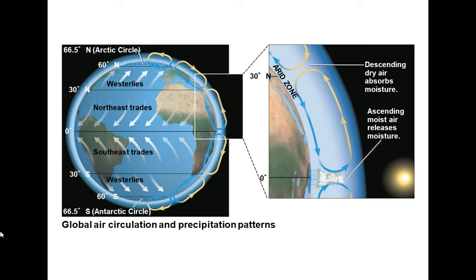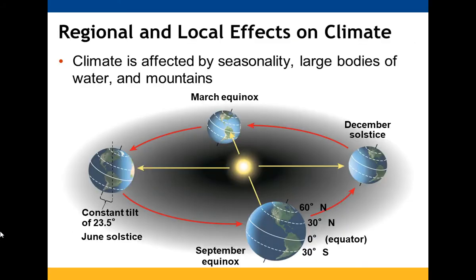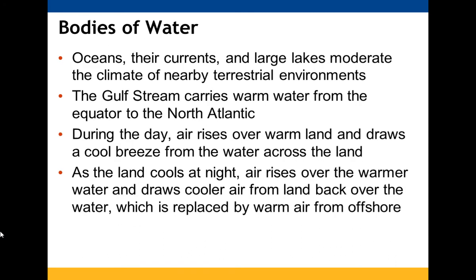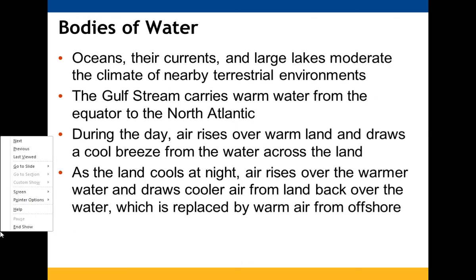The westerlies flow toward the north and south poles, while the northeast and southeast trade winds and descending dry air absorb water and ascending air releases it — cycles similar to feedback loops. Climate can also be affected by seasons, large bodies of water, and mountains. Seasonality depends on light and temperature, with variations increasing toward the poles. At high latitudes this is caused by the Earth's axial tilt and its passage around the sun, with belts of wet and dry air straddling the equator shifting throughout the year as the sun's angle changes.